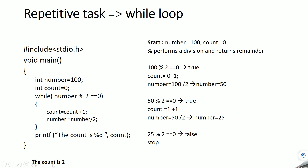At the beginning, number = 100 and count = 0. The control comes to the while condition: 100 % 2 = 0, and 0 == 0 is true. So the code inside gets executed: count = count + 1 (count becomes 1), and number = number / 2 (number becomes 50).